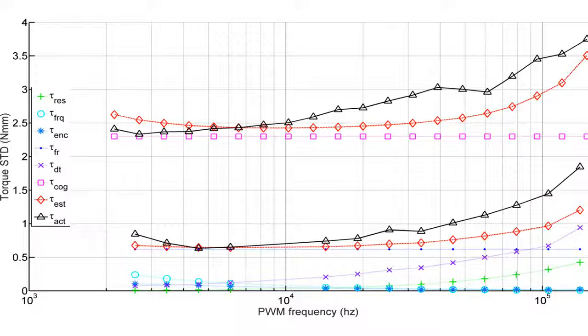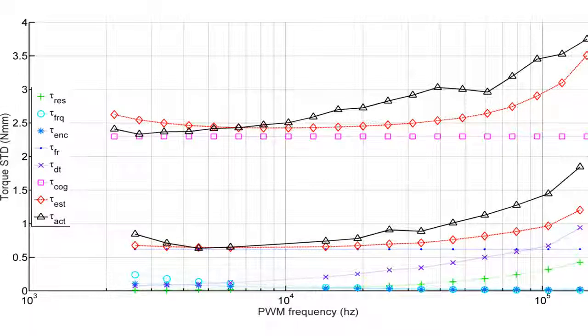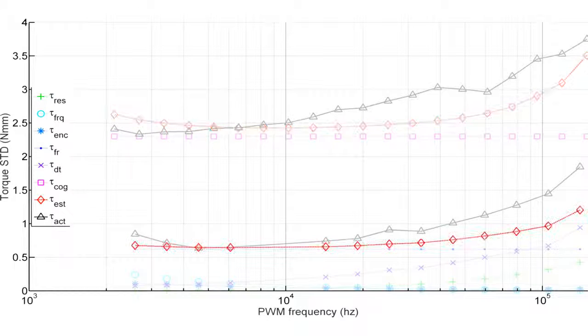But we can do better, and to find out how, we made a torque ripple model that incorporates six different ripple sources and calculated them for a wide range of PWM frequencies. The ripple sources are low PWM frequencies, low PWM resolutions, encoder phase shift, dead time torque, cogging torque, and friction, which combine into the total torque ripple both before anti-cogging and after.